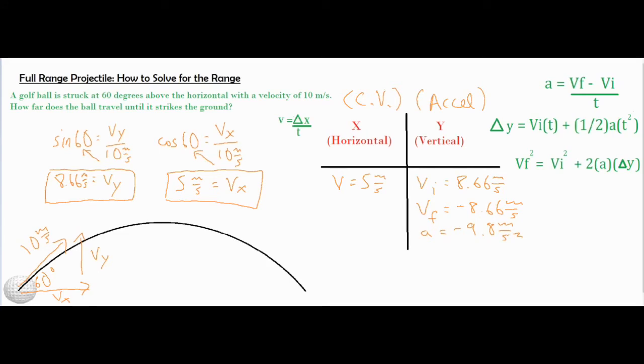The problem asks how far does the ball travel until it strikes the ground, which is our delta X. If we want to find our delta X, we have to use this formula right over here. That's the only formula that we're working with on the left side. We can go ahead and set up what we have: 5 meters per second equals delta X over t. We don't have a t value yet, so our job is to find t on this side so that we can slide it over to the left-hand column.